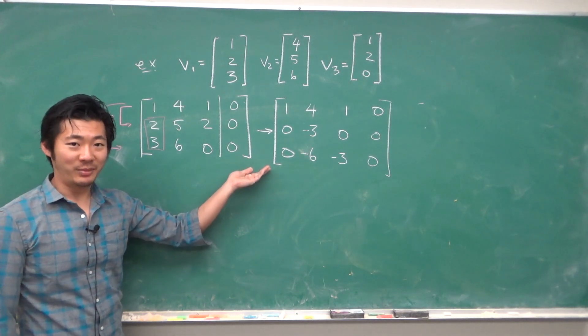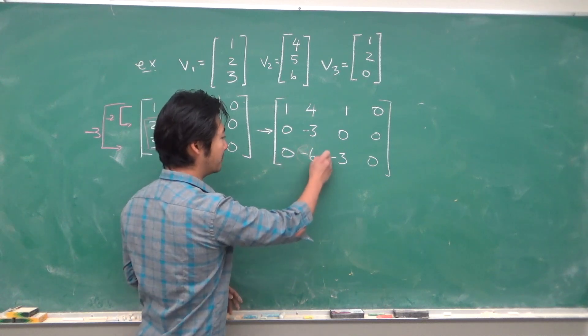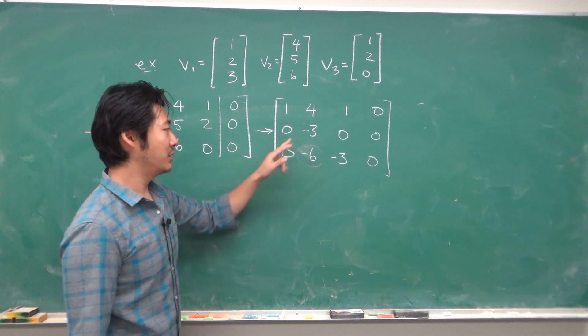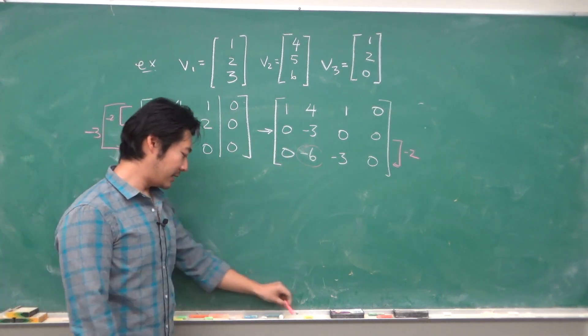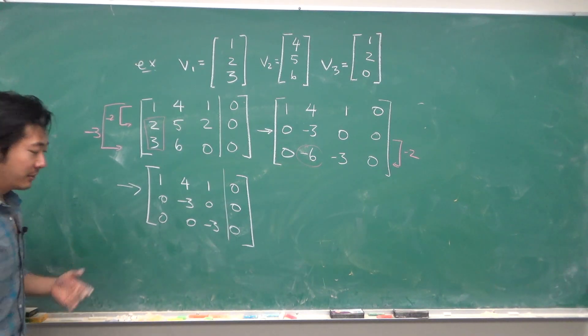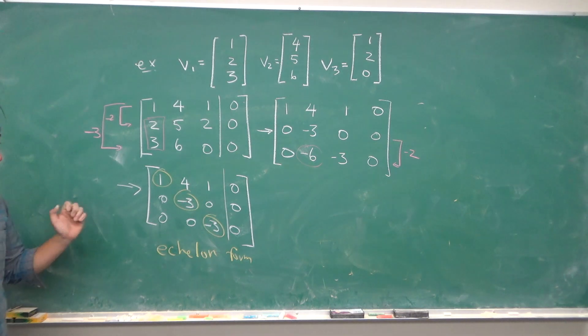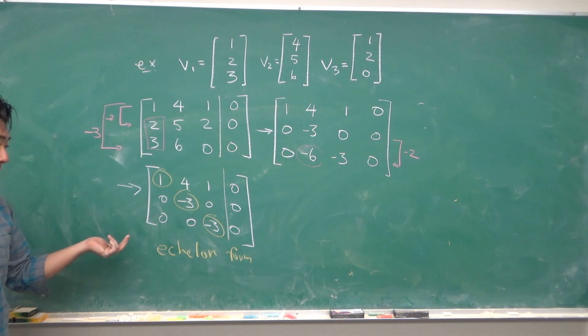Next we want to get rid of this entry, so we'll multiply the second row by negative 2 and add it in to get something like this. Now this is an echelon form, so we can locate our pivots, the non-zero leading entries.